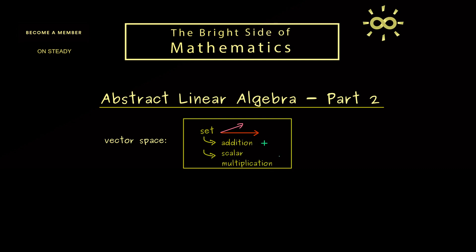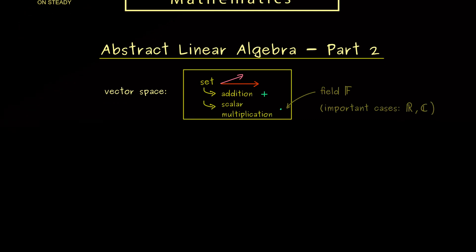We also learned that we need a field to scale vectors. A field is just a set F where we have all the calculation rules we know from the numbers. Therefore the two important cases for us will be that we either scale with real numbers or with complex numbers. Also, don't forget that the rational numbers Q form a field. Now let's go to some examples.